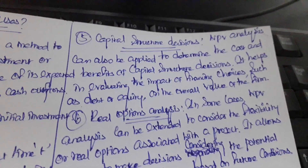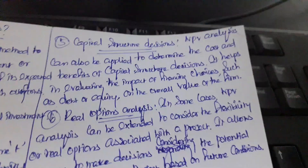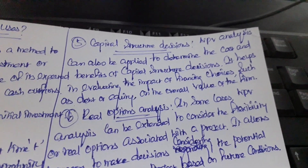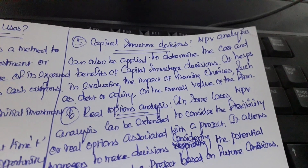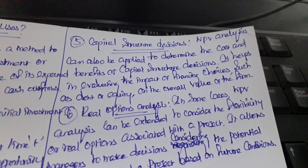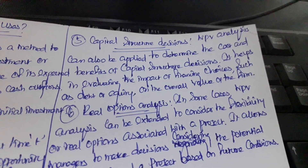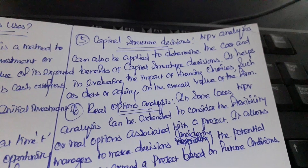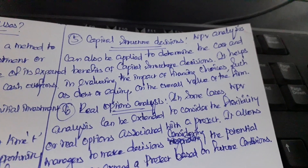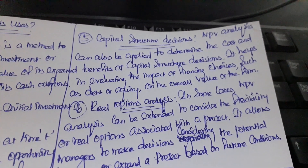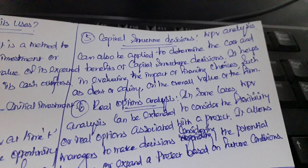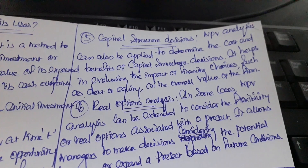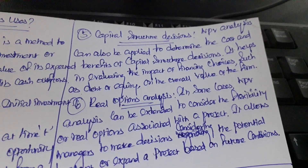The next use is capital structure decisions. NPV analysis can be applied to determine the costs and benefits of capital structure decisions. It helps in evaluating the impact of financial choices, such as debt or equity, on the overall value of the company.